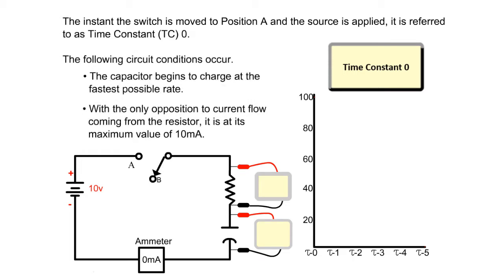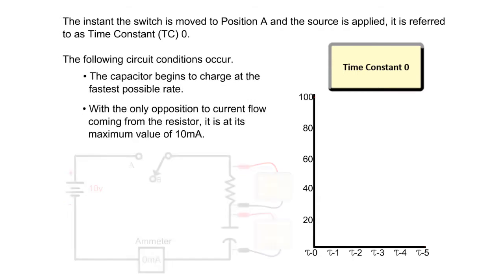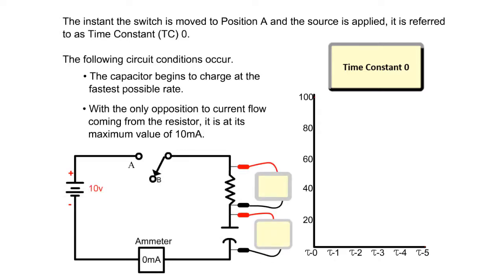The capacitor begins to charge at the fastest possible rate. With the only opposition to current flow coming from the resistor, it is at its maximum value of 10 milliamps.